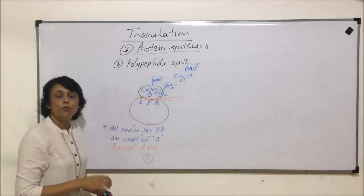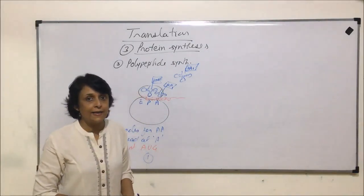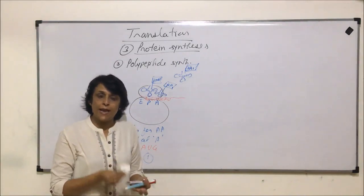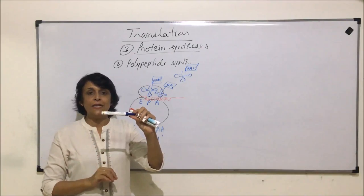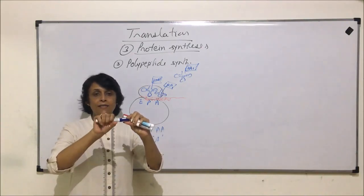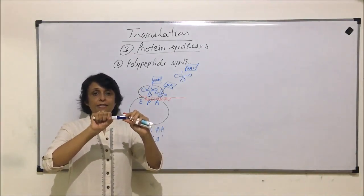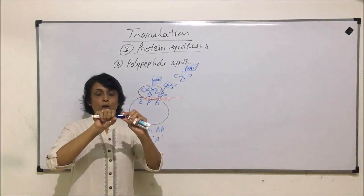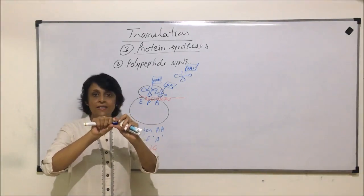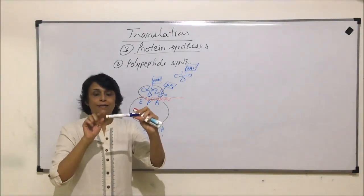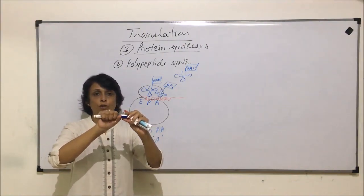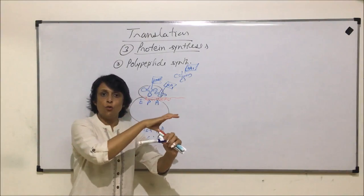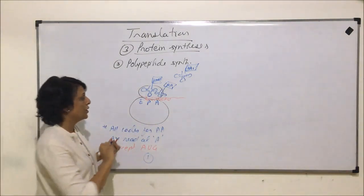Now we need to understand what exactly we are talking about. So suppose this pen represents the mRNA and this is ribosome. If this mRNA slides here without ribosome moving, that is a different situation. Or the second one is this is mRNA, the ribosome is here, it moves to position 2, then 3 and so on. This is known as translocation.